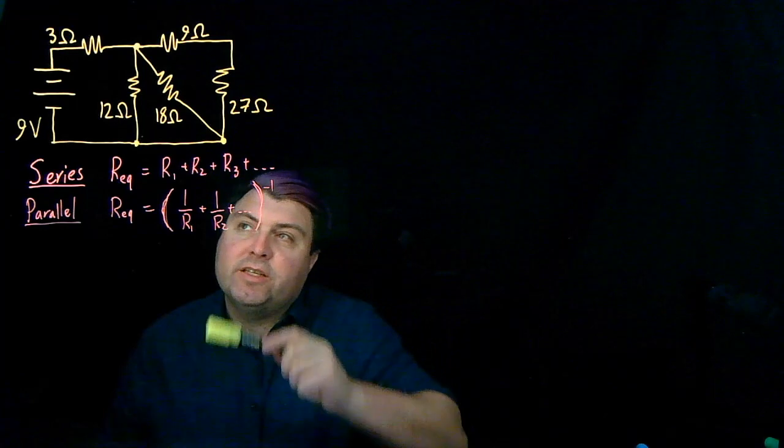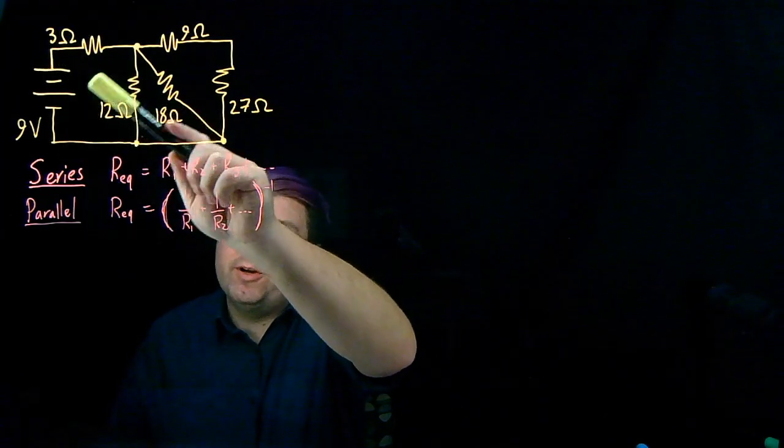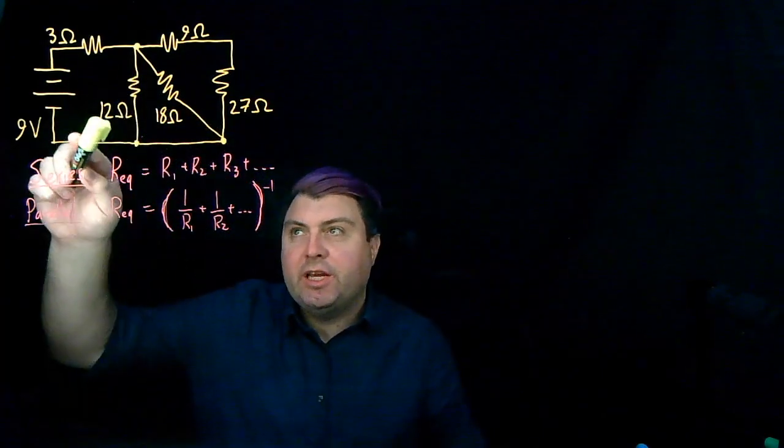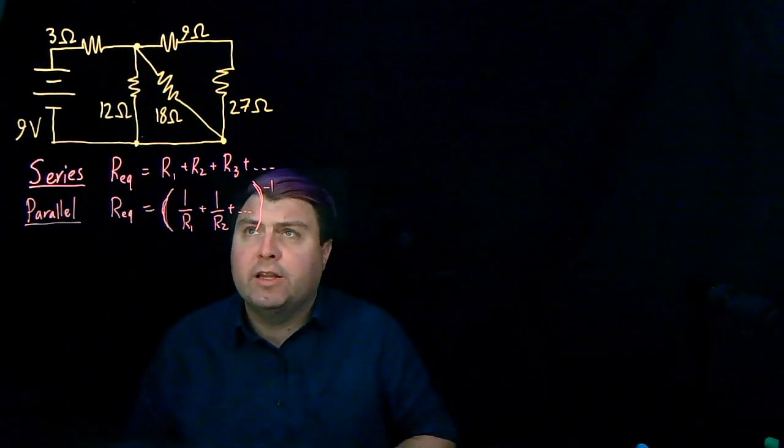So what we can see is we have our battery, and as we travel through our battery, we have to then travel through the 3 ohm. There's no choice from the battery that doesn't involve the 3 ohm. So we're saying the 9 volt and the 3 ohm are in series with each other. We have to go through one and then the other.